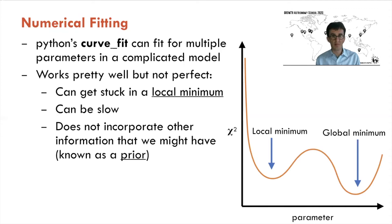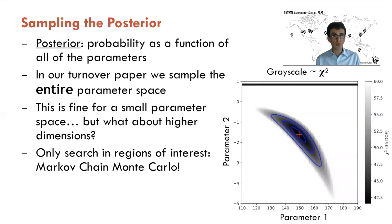Something like curve_fit also doesn't incorporate what we call a prior — a way of incorporating other information we might have about the problem, such as knowing a certain parameter is likely to be large, or small, or linked to another parameter. Our eventual goal is to look at the posterior: the probability as a function of all the parameters. For a simple two-parameter search using a grid, the chi-squared is shown in grayscale — darker colors are lower values — and the red cross illustrates the best fit.